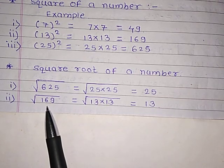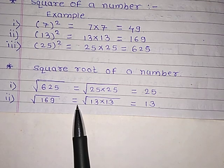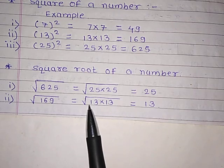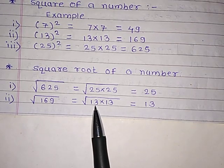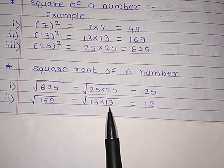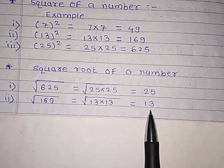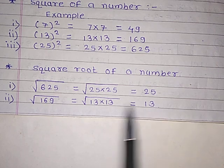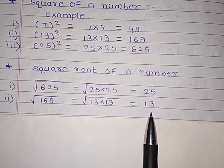Next: the square root of 169 is equal to — in the square root sign, 13 multiplied by 13 — which is equal to 13. It means the square root of 169 is 13.